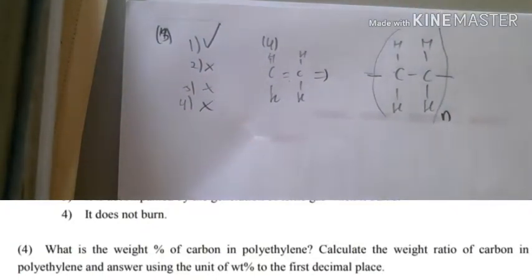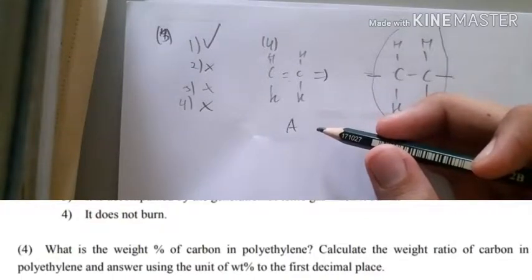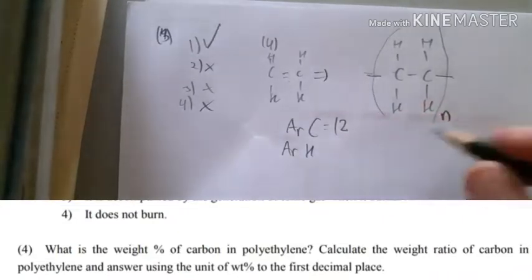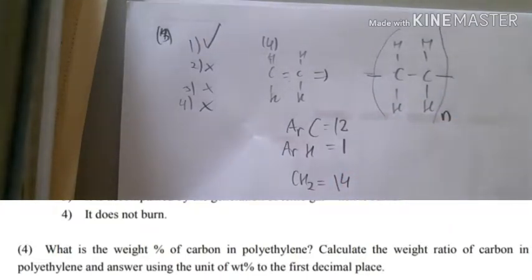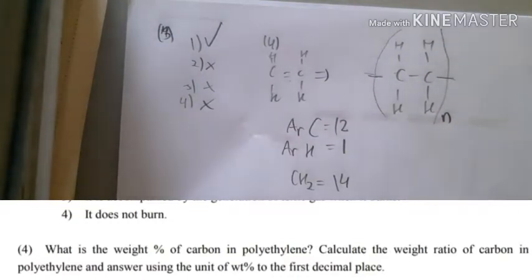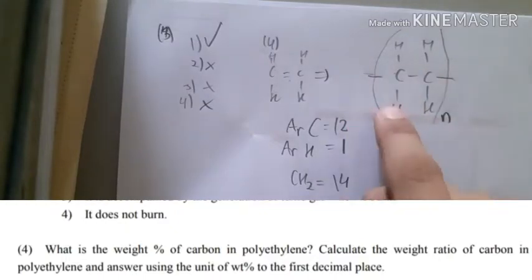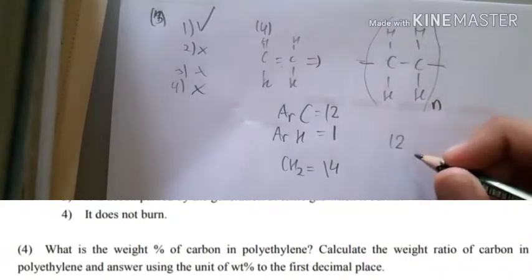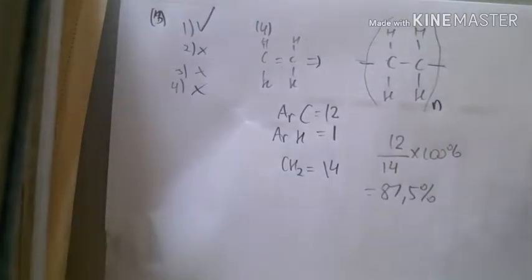Remember that the relative atomic mass of carbon is 12 and H is 1. CH2, if you combine that, has 14. The weight percent of carbon in polyethylene: just use one compound because it's the same. Carbon has 12, the total is 14, so 12 divided by 14 times 100, which is 85.7 percent. Remember it's first decimal place, so the answer is 85.7.